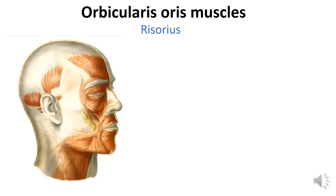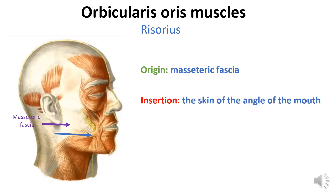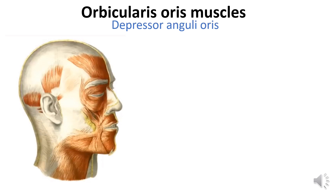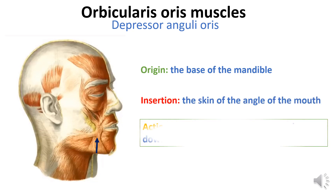The risorius begins on the masseteric fascia, goes forward and medially, and attaches to the skin of the corner of the mouth. It pulls the corner of the mouth laterally, forming a dimple on the cheek; it is usually weakly expressed and often absent. The depressor anguli oris has a triangular shape. It originates from the lower edge of the mandible, covers the chin, and inserts into the skin of the angle of the mouth. This muscle pulls the angle of the mouth downwards.